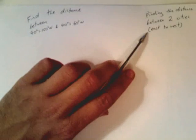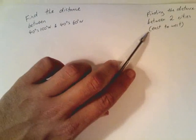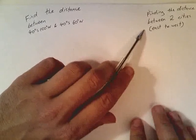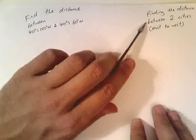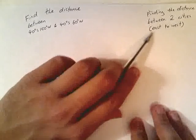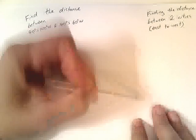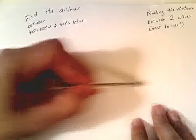Okay, so we're finding the distance between two cities again. This time we're finding... oop, focus is out. We're finding the distance between two cities, this time doing it east to west. In a previous video, we found the distance between two cities when they were north to south of each other. This time we're going to be going east to west.